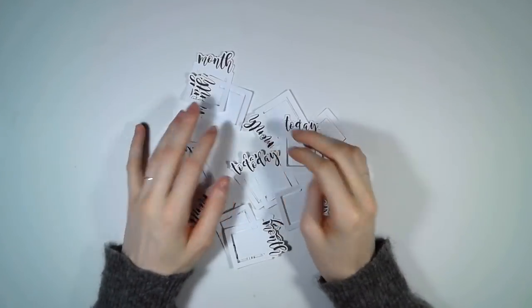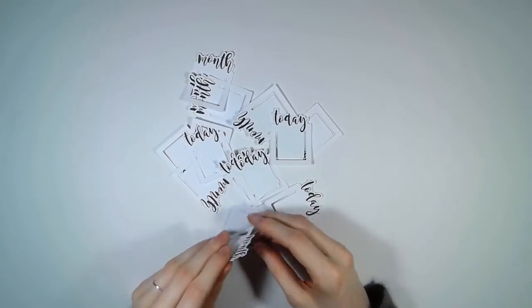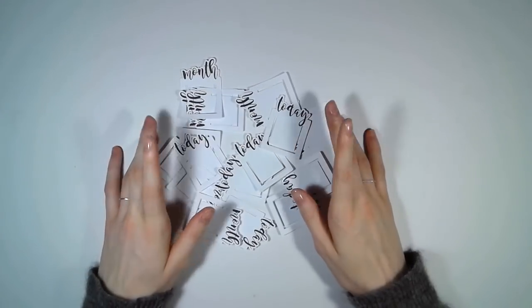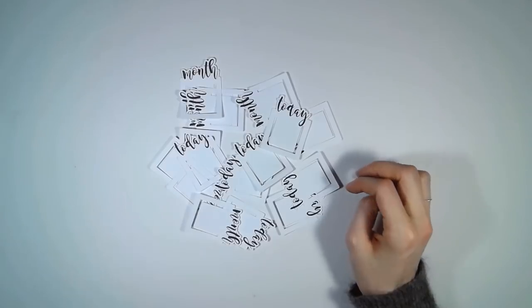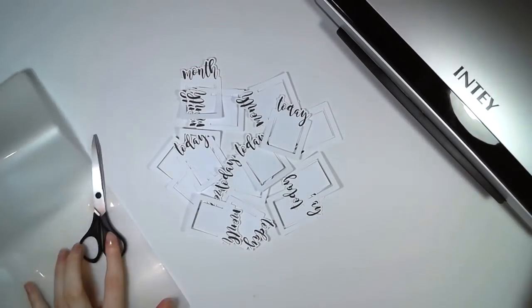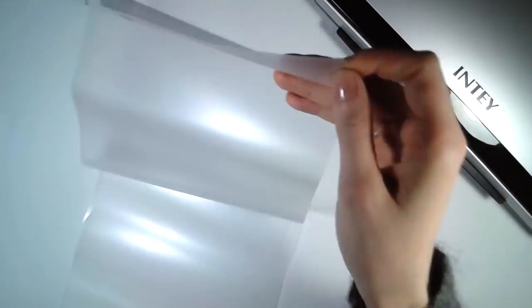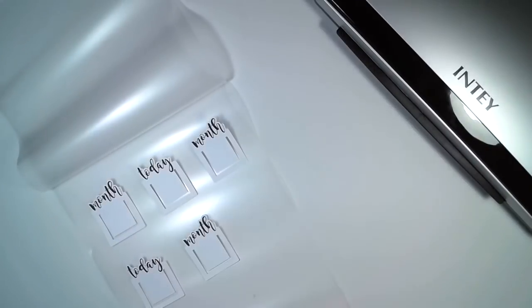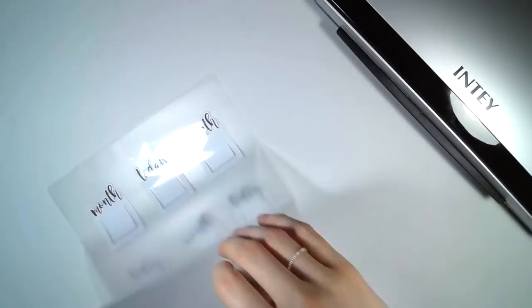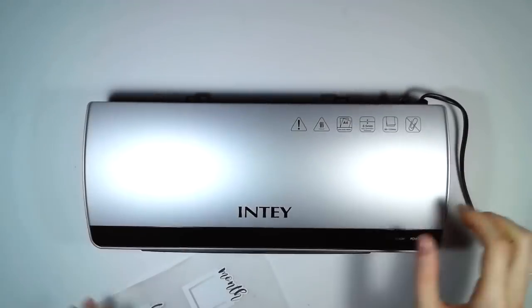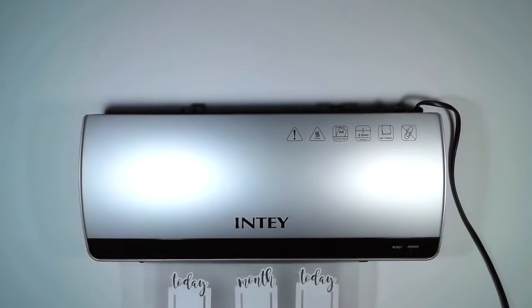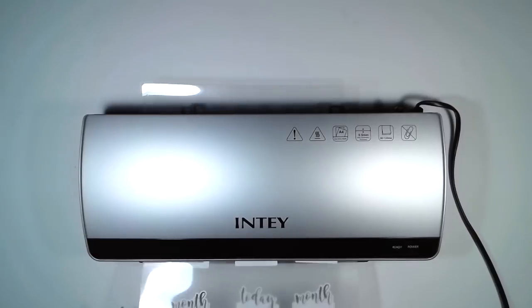So for the DIY you're going to need the tabs and you can either use a silhouette to cut them out or scissors. I'm going to put a silhouette file and a normal PDF in the description box. Then you're going to need a laminator, laminating sheets and scissors and a knife. First of all we're going to place the tabs into the laminating sheets so we can then put them into the laminator. Make sure to hold on to the laminating sheet while laminating so it won't slip out.